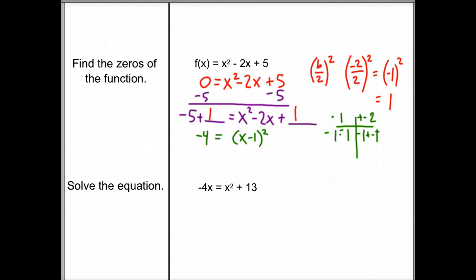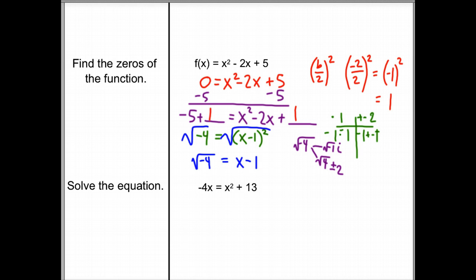Now we solve by undoing — we undo the squaring. So we have the square root of negative 4 equals x minus 1. We're going to split this up: the square root of negative 4 is the square root of negative 1 times the square root of 4. The square root of 4 is plus or minus 2, and the square root of negative 1 is i. So we really have x minus 1 equals plus or minus 2i. Adding 1 to both sides, our final answer is x equals 1 plus or minus 2i.